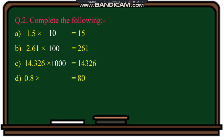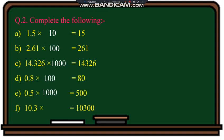Zero point eight into dash equals to eighty. Eighty means the decimal is shifted two places, so two zeros — the answer is hundred. Zero point five into dash equals to five hundred: one, two, three digits, that is thousand. Zero point three into dash equals to ten thousand three hundred. After the decimal in the multiplicand we have one digit, but after three we have two more digits — so decimal is shifted three places, meaning it is multiplied by thousand.